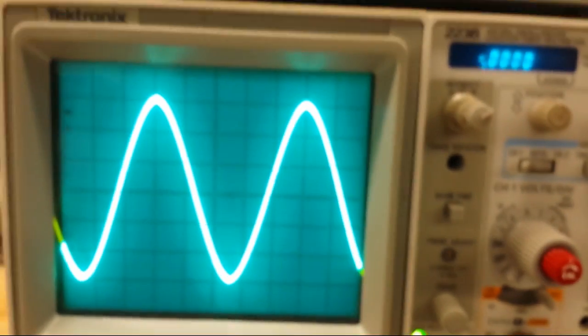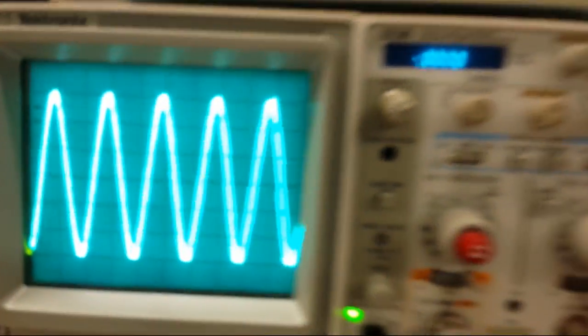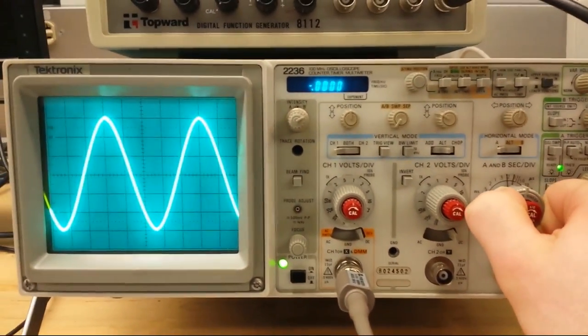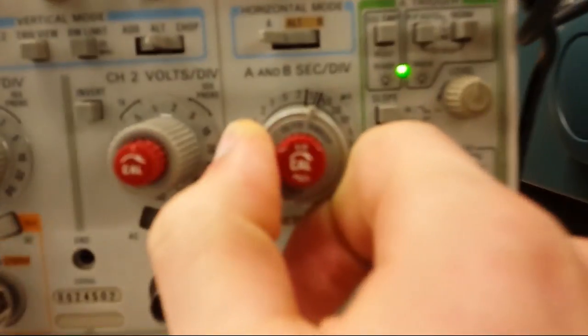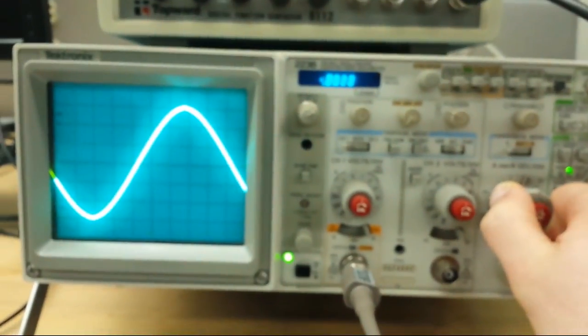And just like what we did with the amplitude, we can do the same with the frequency, and we can adjust. So, we can put that up to 0.5, and that compresses it even more. And we can put it down to 0.1. You can see 0.1. Come on. There we go, 0.1. And you can see.